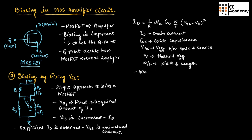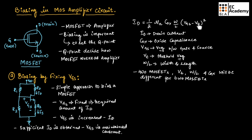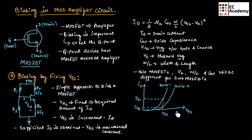If we consider two MOSFETs, the threshold voltage, W/L ratio, and COX will be different for each. So for any two MOSFETs, the threshold voltage, W/L ratio, and oxide capacitance will all be different.